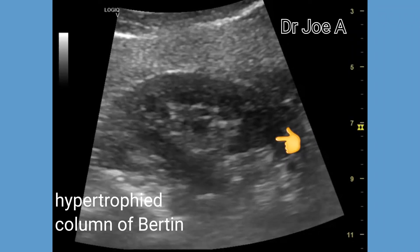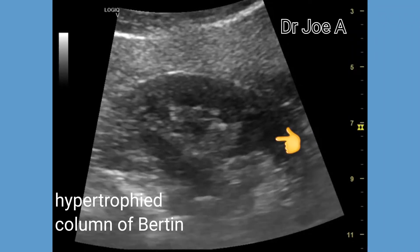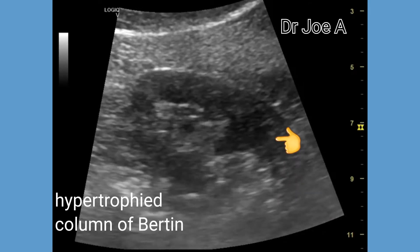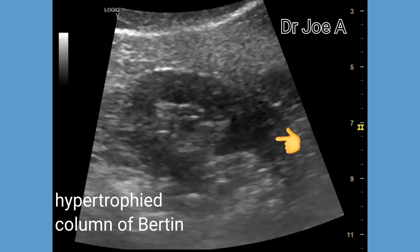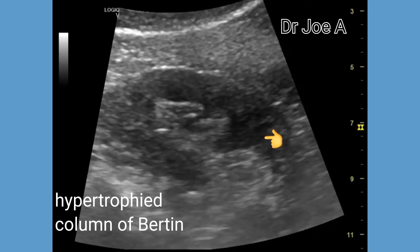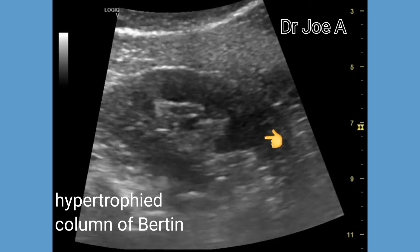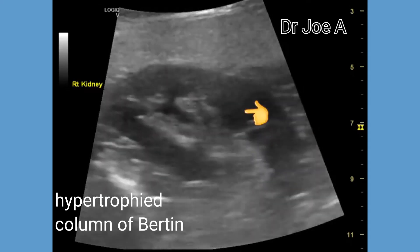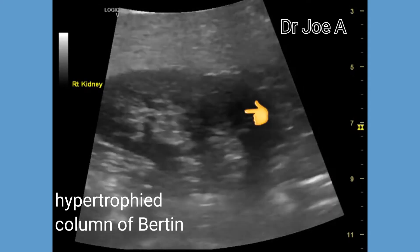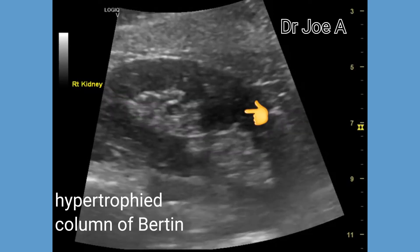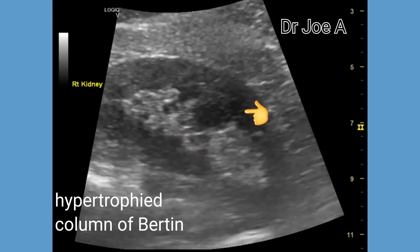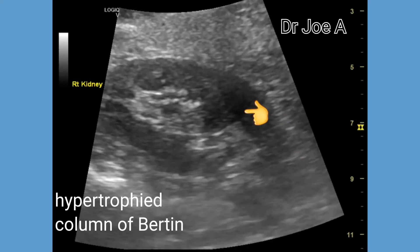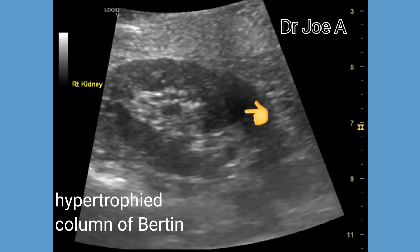This is a case of a normal anatomical variant called hypertrophied column of Bertin. A column of Bertin is normally seen as an extension of renal cortical tissue into the medulla between the pyramids. In this case, however, the renal column of Bertin is hypertrophied or prominent, and hence it is called a hypertrophied column of Bertin, or a prominent column of Bertin.